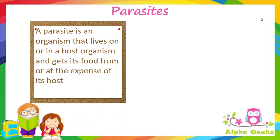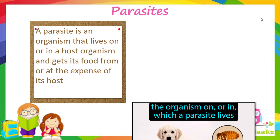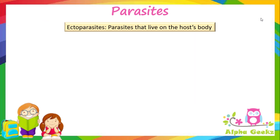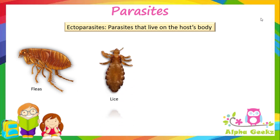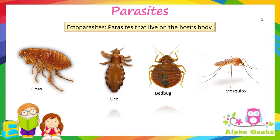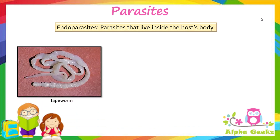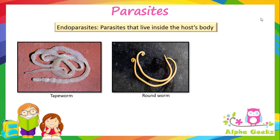Animals that live on or inside the bodies of other animals and depend on them for food and shelter are called parasites. The animal that provides food and shelter to the parasite is known as the host. Parasites cause harm to the host. Parasites that live on the body of human beings or other animals are called ectoparasites — examples include fleas, lice, bedbugs and mosquito. The parasites that live inside the host body are called endoparasites — examples include tapeworm, roundworm and hookworm.